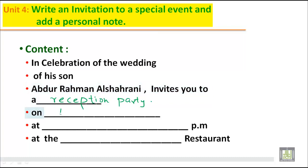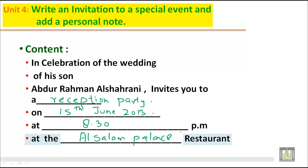Here you have to write the date. For example, if it is 15th June 2013. At — what time? At 8:30 PM. At the restaurant, so you have to write the name of the restaurant. For example, if it is Al-Salam Palace restaurant.